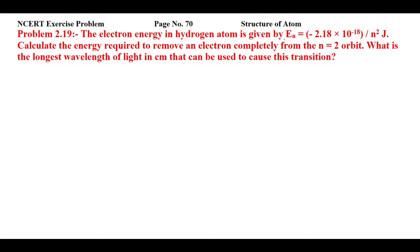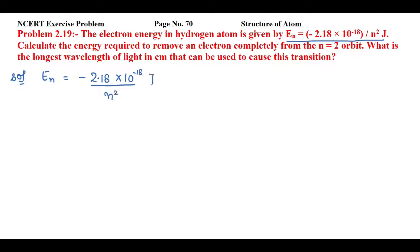In this question, they have given you the electron energy of hydrogen atom represented by E subscript n equal to minus 2.18 into 10 raised to power minus 18 by n square joule. That means the energy of any orbit is represented by this formula, expressed in joule. You have to find the energy required to remove the electron completely from orbit 2.